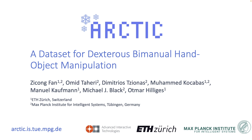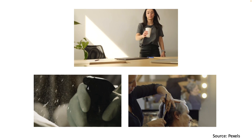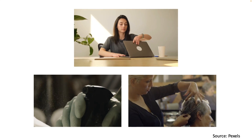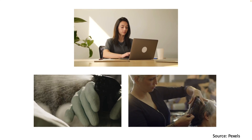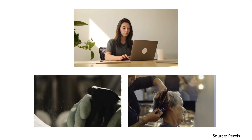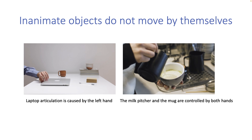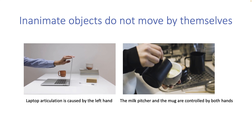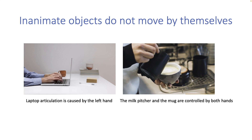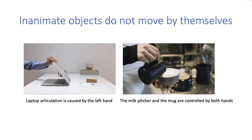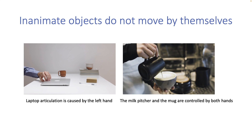Arctic: a dataset for dexterous bimanual hand object manipulation. Humans constantly manipulate complex objects. We open our laptop's cover to work. We apply water spray to clean windows. We use our fingers to cut with scissors. We intuitively understand that inanimate objects do not move by themselves, and their state changes are typically caused by our hand motion.